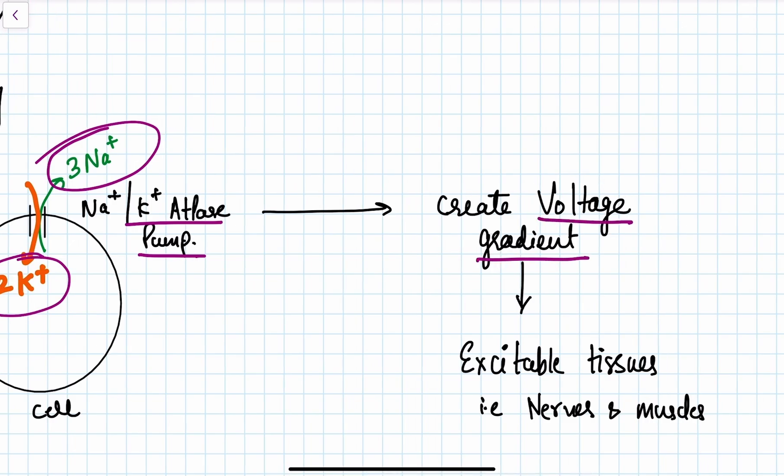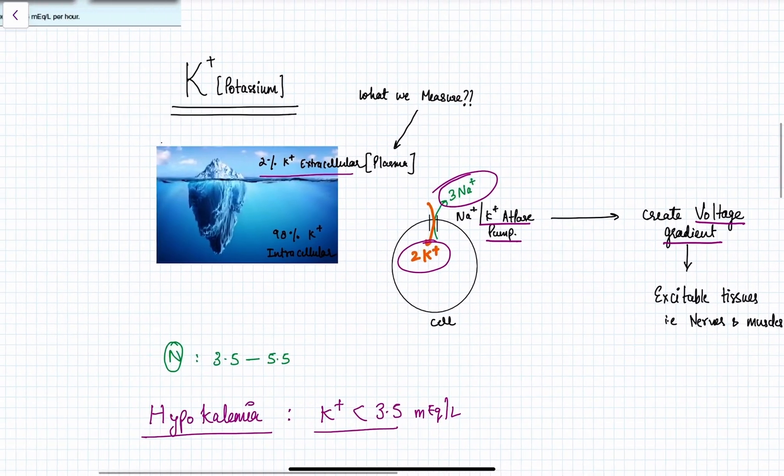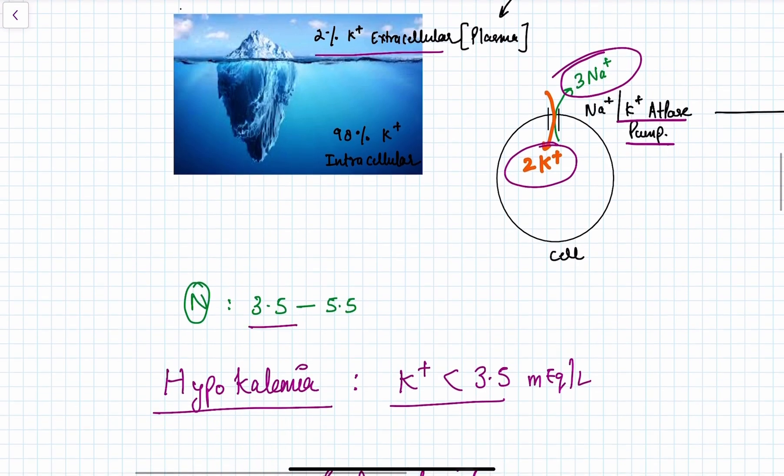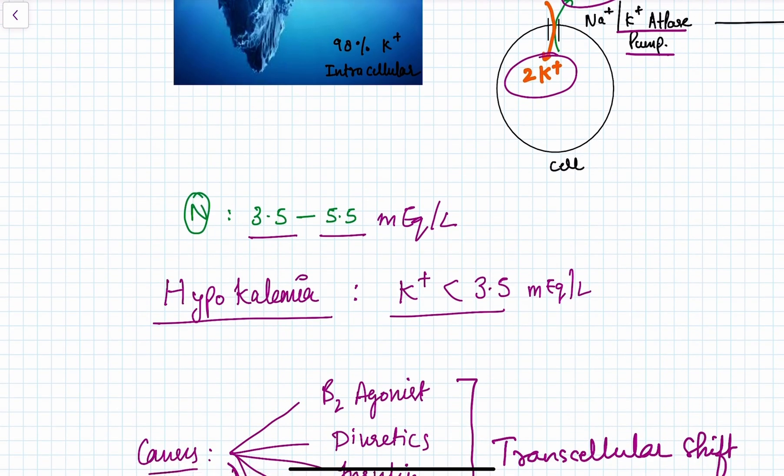This pump creates a voltage gradient for excitable tissues, that is, nerves and muscles. The normal level of potassium is 3.5 to 5.5 milliequivalents per liter. Hypokalemia is defined as serum potassium levels less than 3.5 mEq/L.